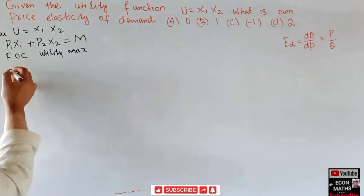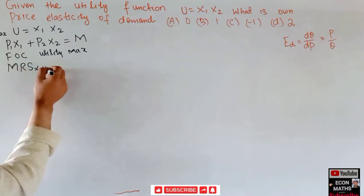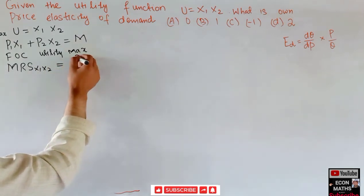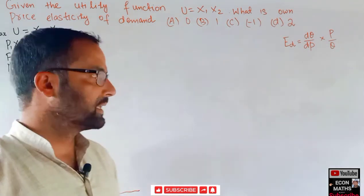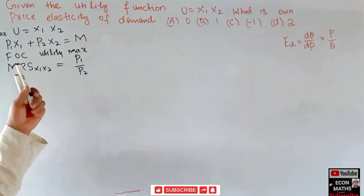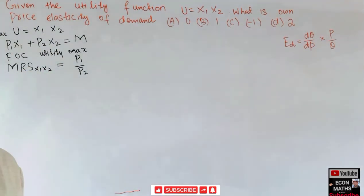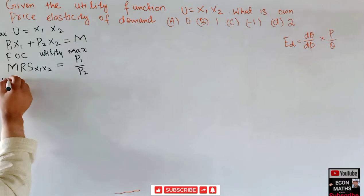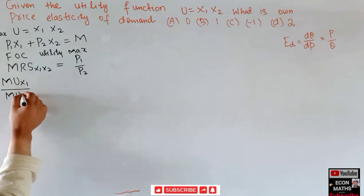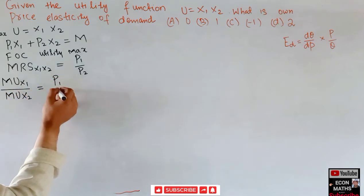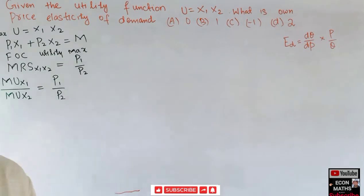Our marginal rate of substitution between x1 and x2 should be equal to the ratio of prices, that is p1 divided by p2. Utility is maximized when the marginal rate of substitution between two goods equals the ratio of their prices. This MRS is also written as marginal utility of x1 divided by marginal utility of x2 should equal p1 by p2. This is the tangency condition — the first order condition for utility maximization.